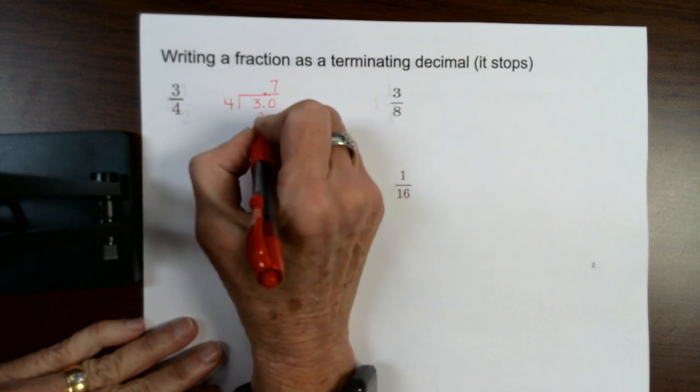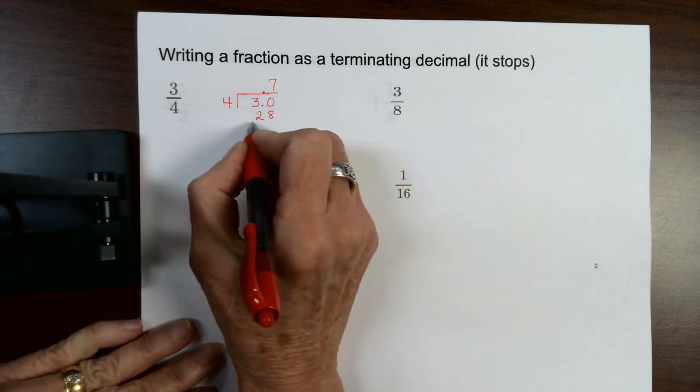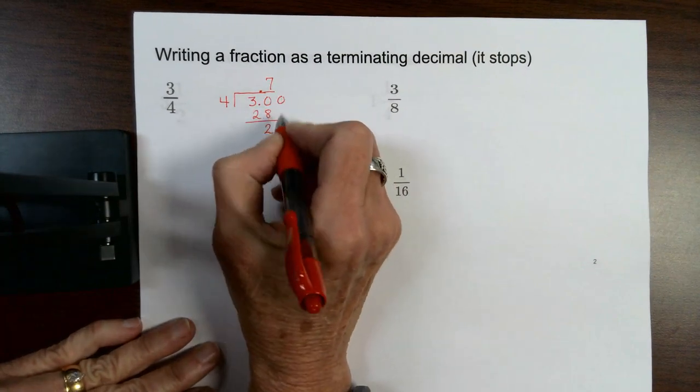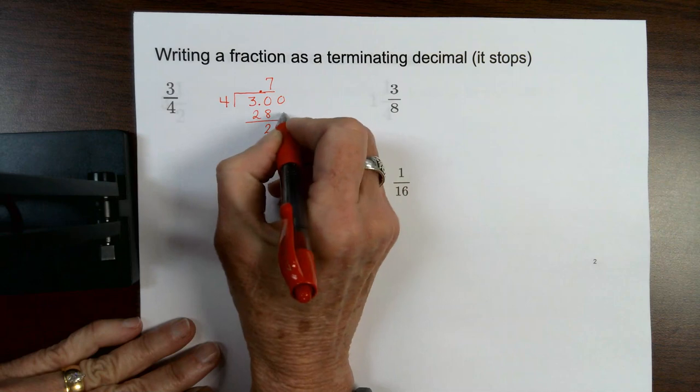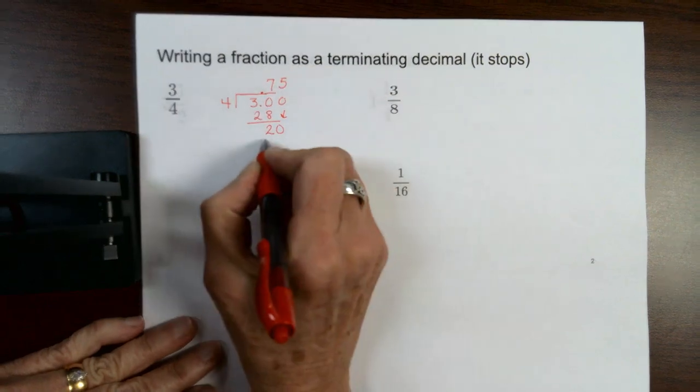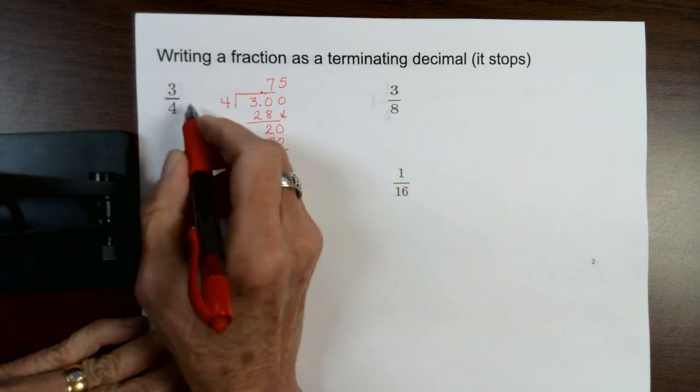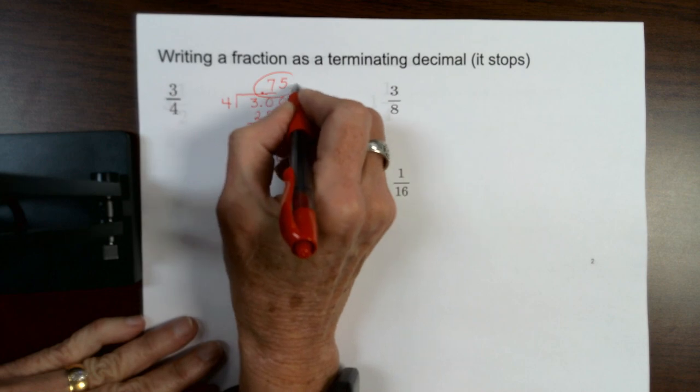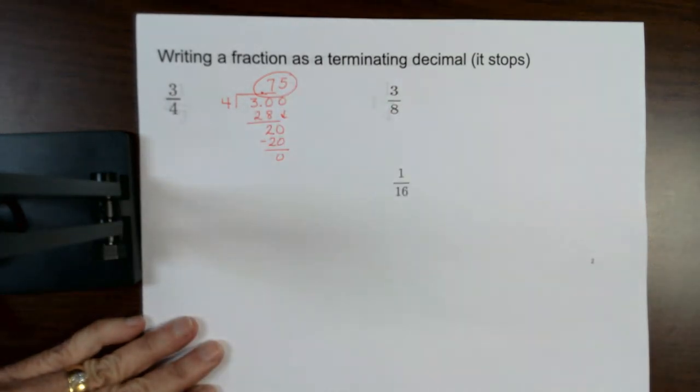4 times 7 is 28, so I'm going to subtract. Then I'm going to add another 0 and bring it down. So 4 goes into 20, 5 times. And that's where it comes out even. So the fraction 3 fourths is equal to the decimal 0.75.